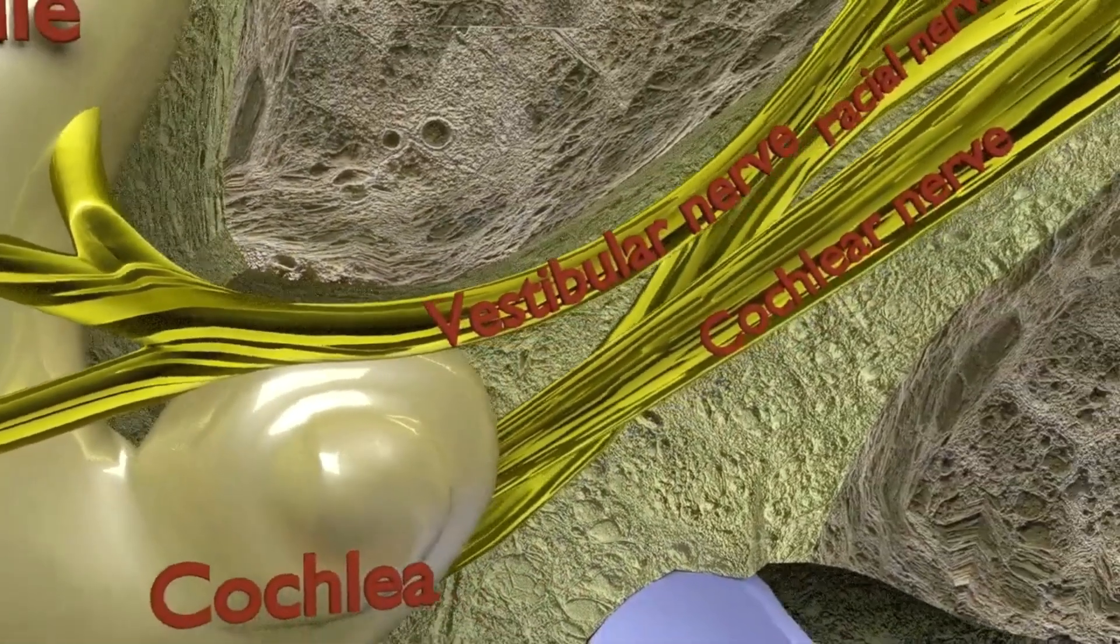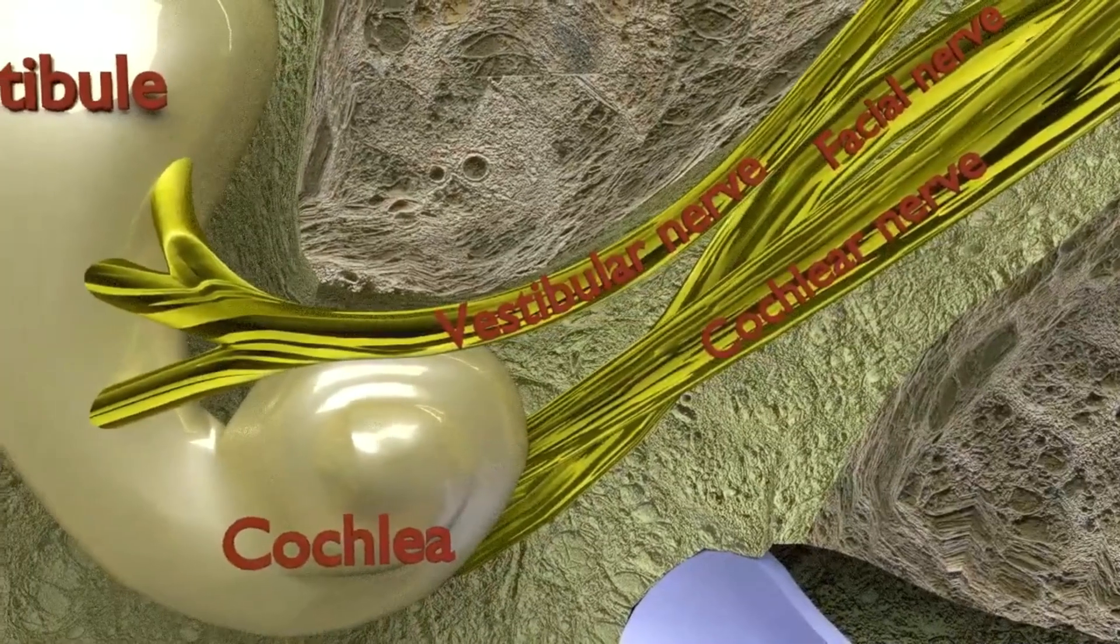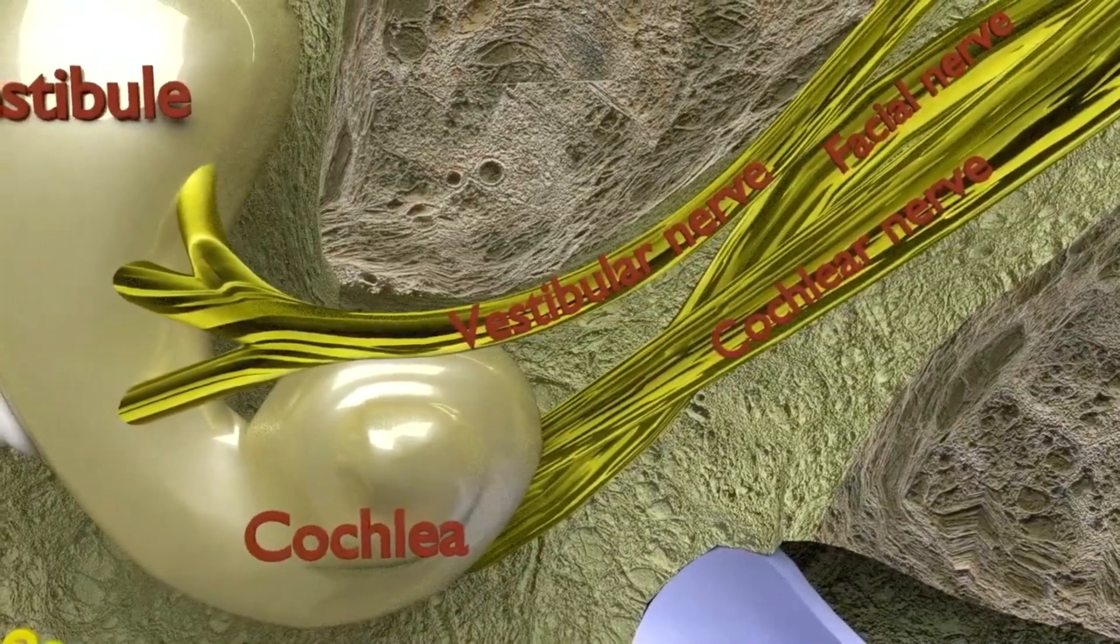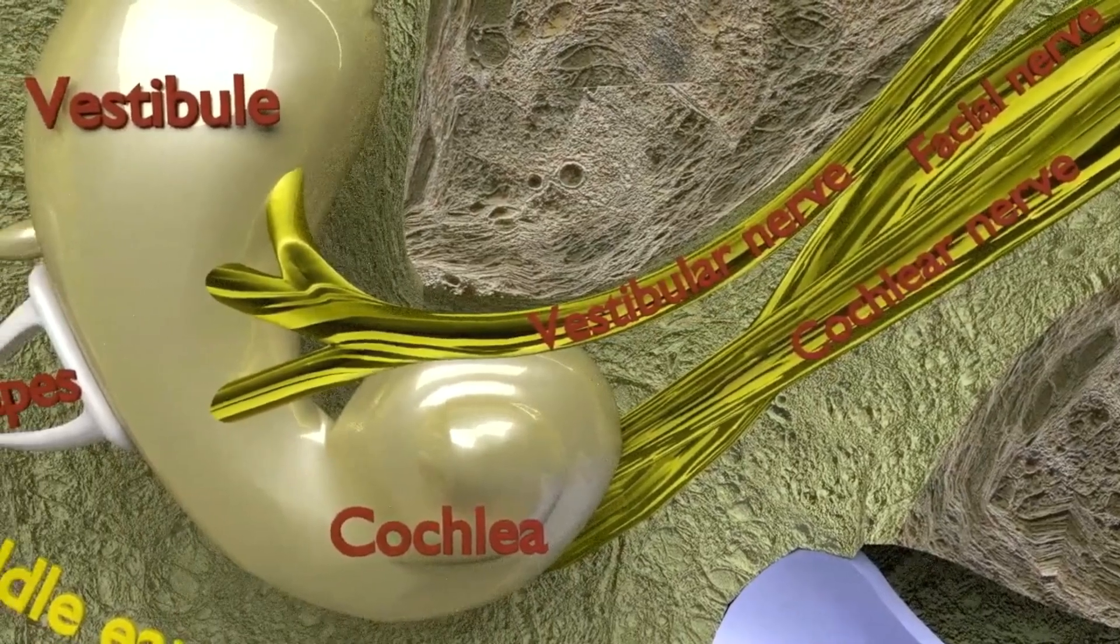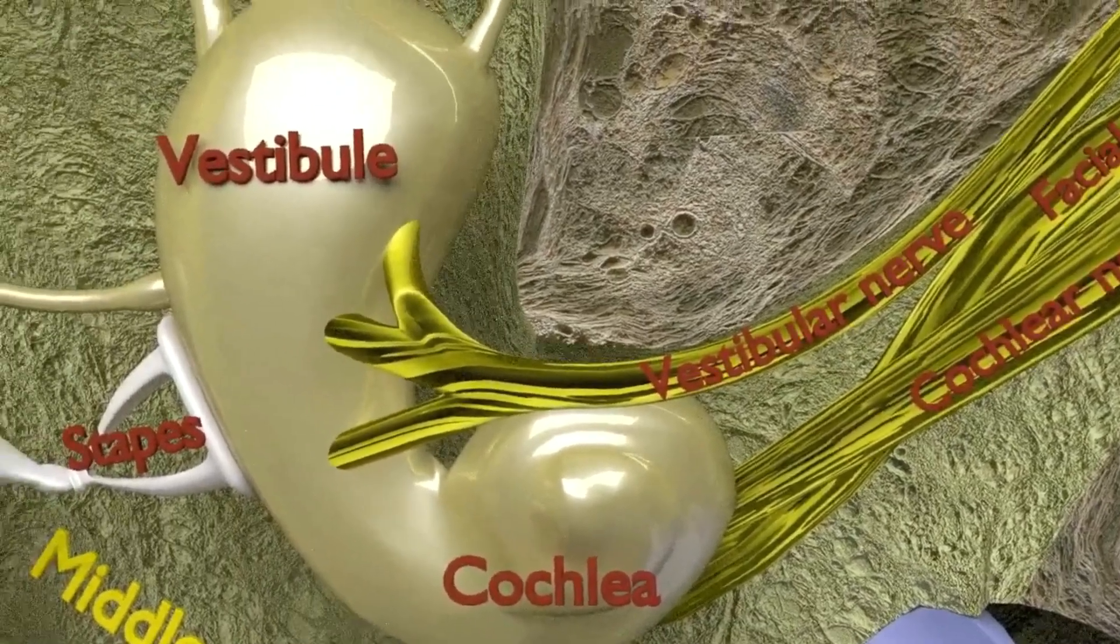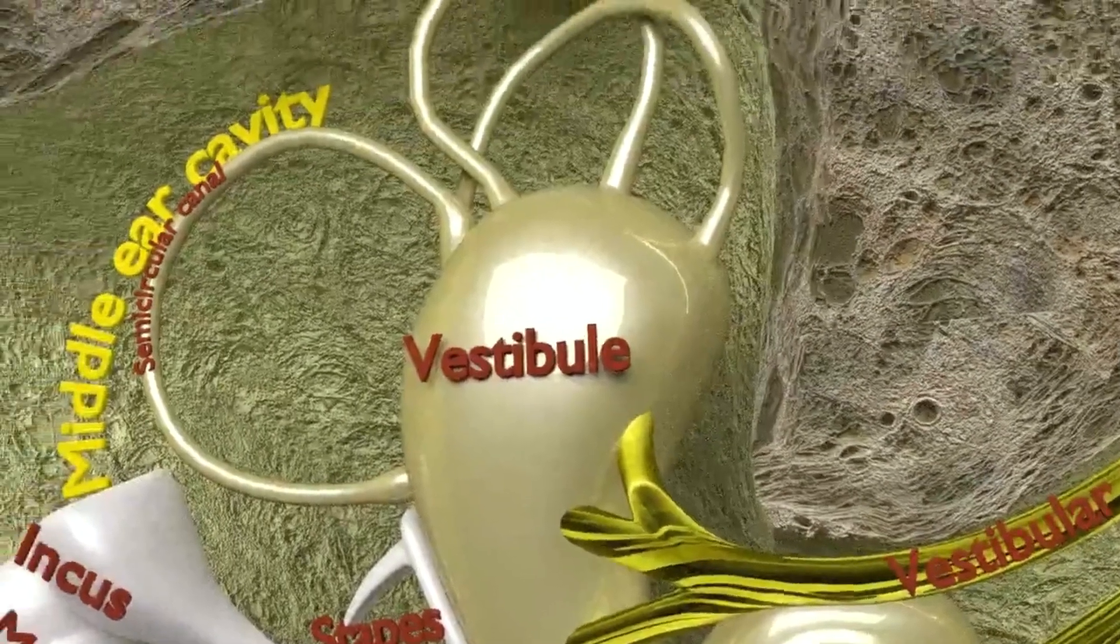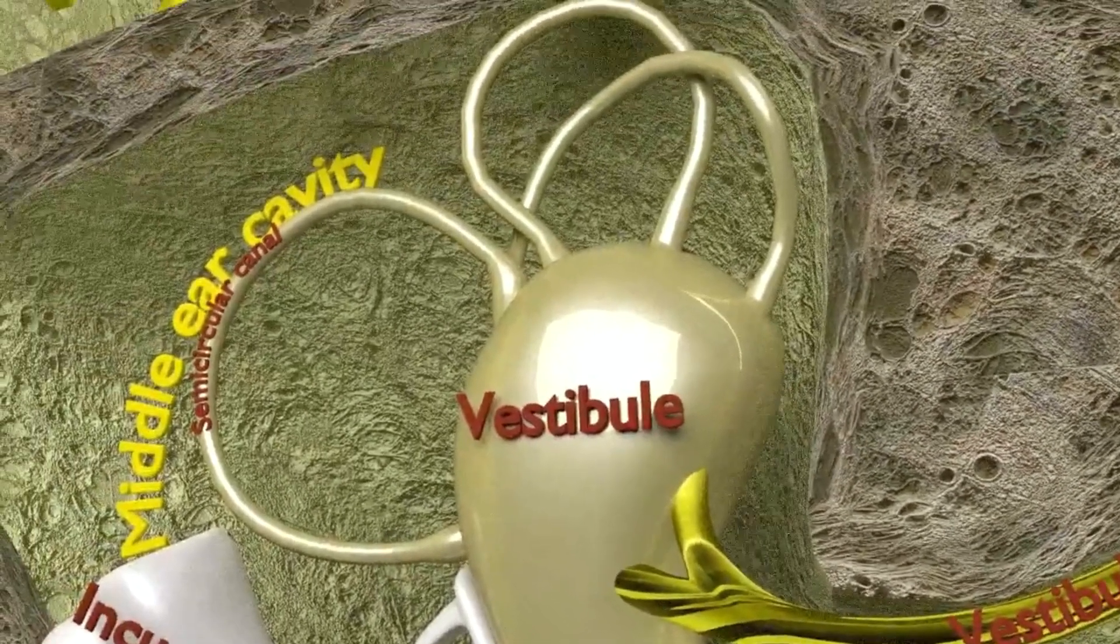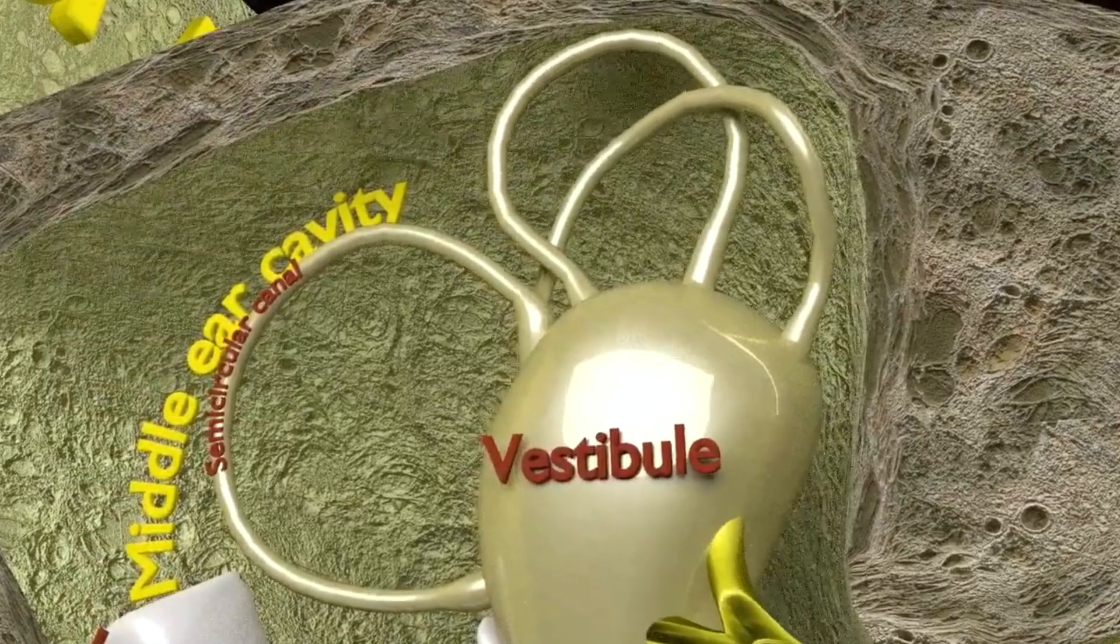The inner ear sits within the temporal bone in a complex cavity called the bony labyrinth. The bony labyrinth has three parts: a central area known as the vestibule, which contains two small fluid-filled recesses, the utricle and the saccule.